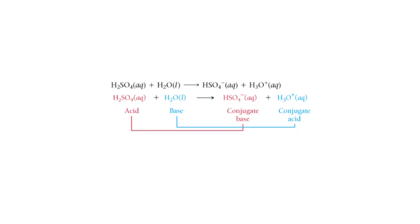An important relationship: when we have a strong acid on the left side of a reaction, it will have a weak conjugate base. Conversely, if we have a weak acid, it will have a strong conjugate base.